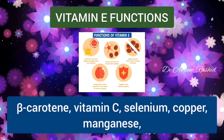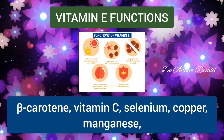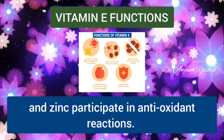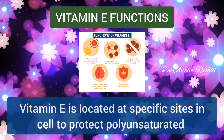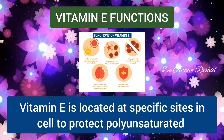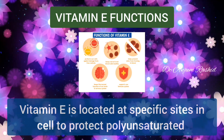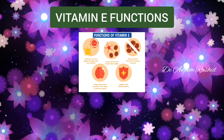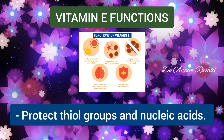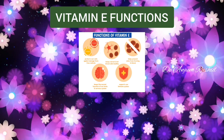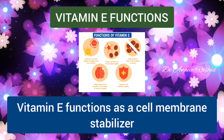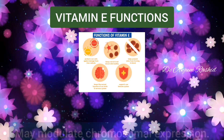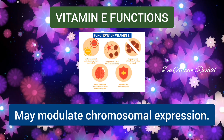The nutrients that participate in antioxidant defenses include beta-carotene, Vitamin C, selenium, copper, manganese, and zinc. Vitamin E is located at a specific site in the cell to protect polyunsaturated fatty acids in the membrane lipids from lipid peroxidation, and it protects thiol groups and nucleic acids. Vitamin E also functions as a cell membrane stabilizer, may function in the electron transport chain, and may also modulate chromosomal expression.